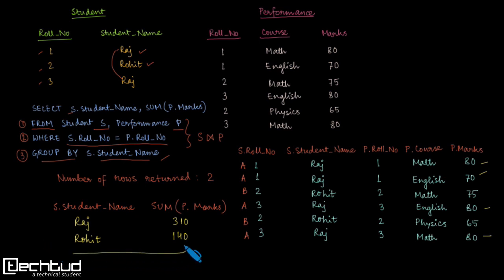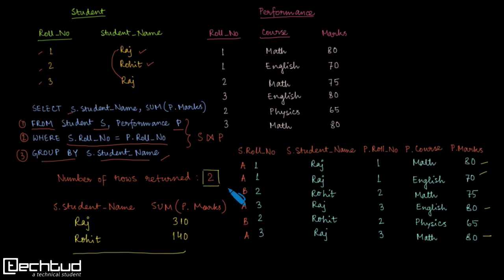This will be the final result shown by this query. The number of rows returned is two. That is why the answer to this question is two. I hope this was clear — it's a very simple query, and I have already shown you how you can get the answer without solving the full query in detail.